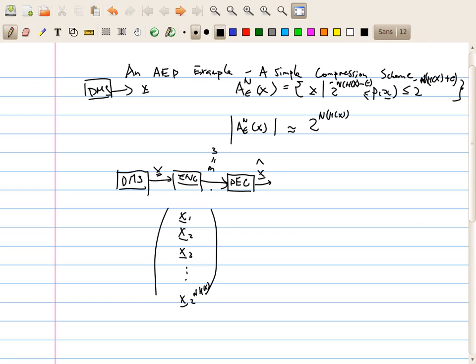So, then how much we can compress using this simple scheme here? We can compress the source x into 2 to the n H(x) log 2 to the n H(x) bits. Because we have 2 to the n H(x) sequences, or the size, the index, the number of indexes will be 2 to the n H(x) as well, and therefore we only need log 2 to n H(x) bits to represent all these indexes. Therefore, it will be equal to n H(x) bits.